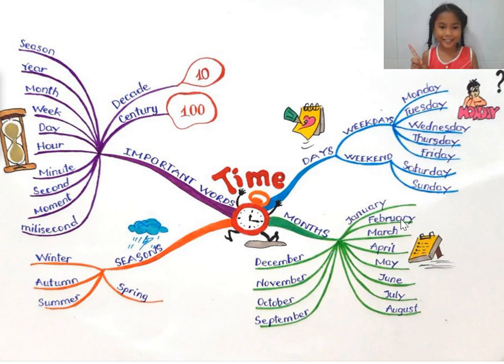First is seasons. What do seasons mean? Seasons are like winter, autumn, summer, and spring. We can learn about seasons. Now let's learn these words.